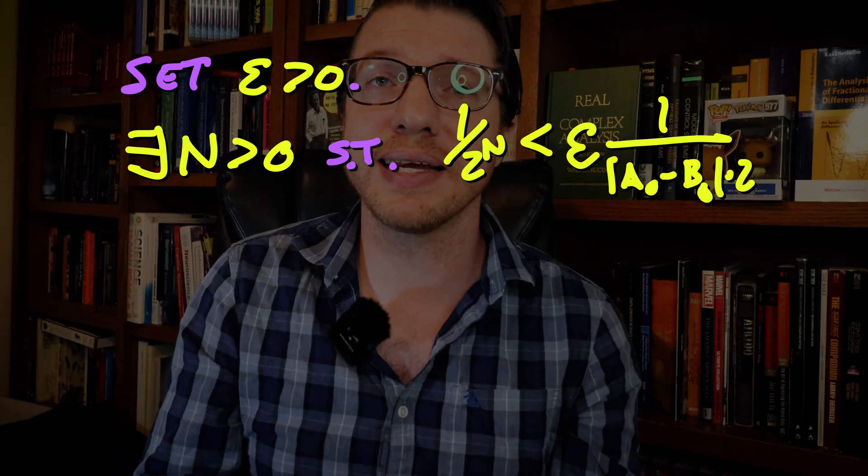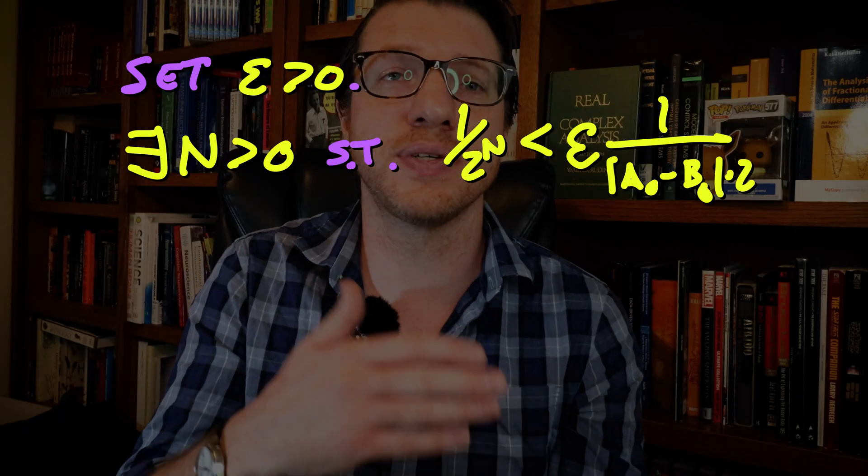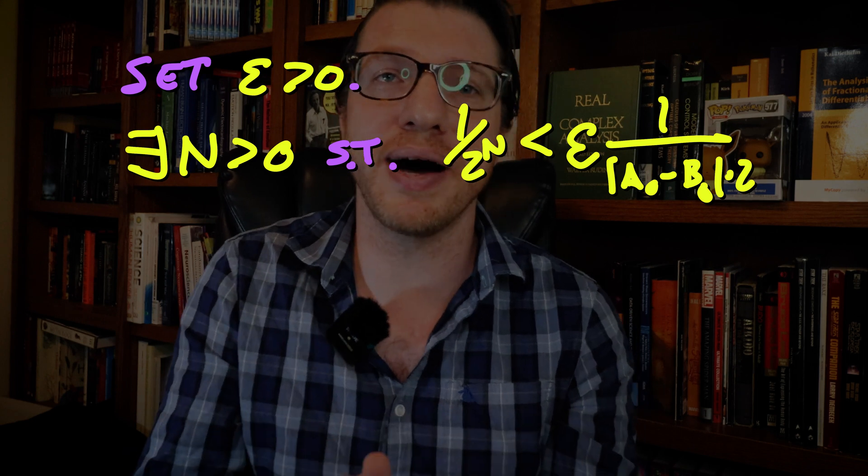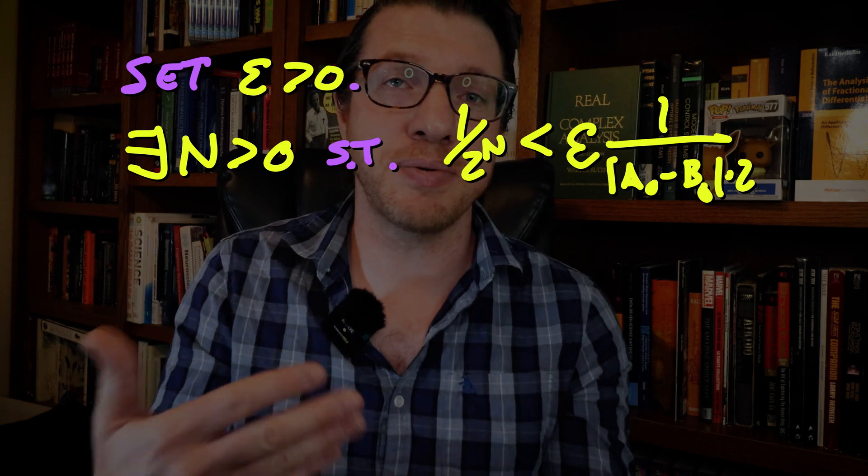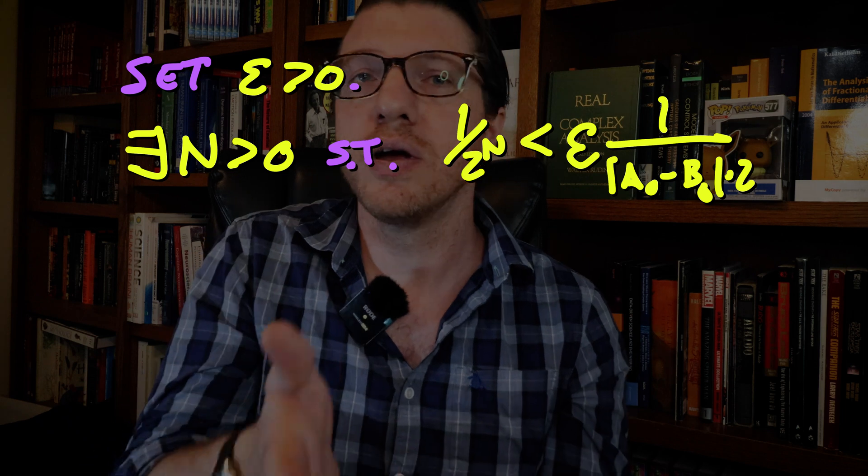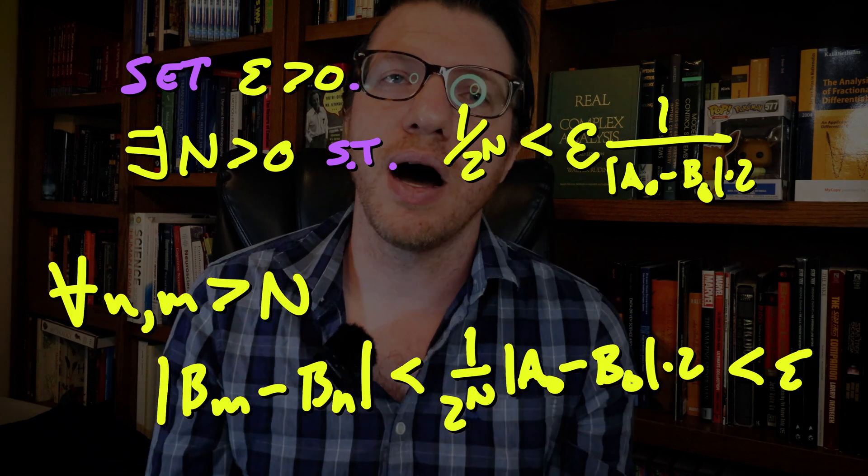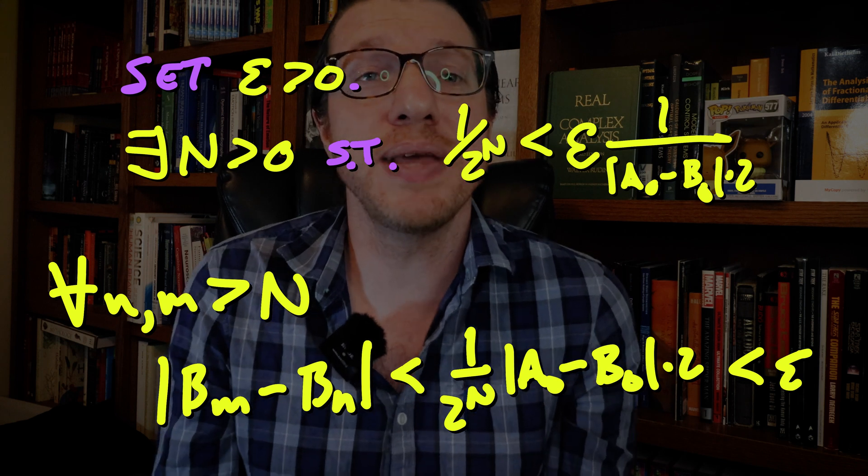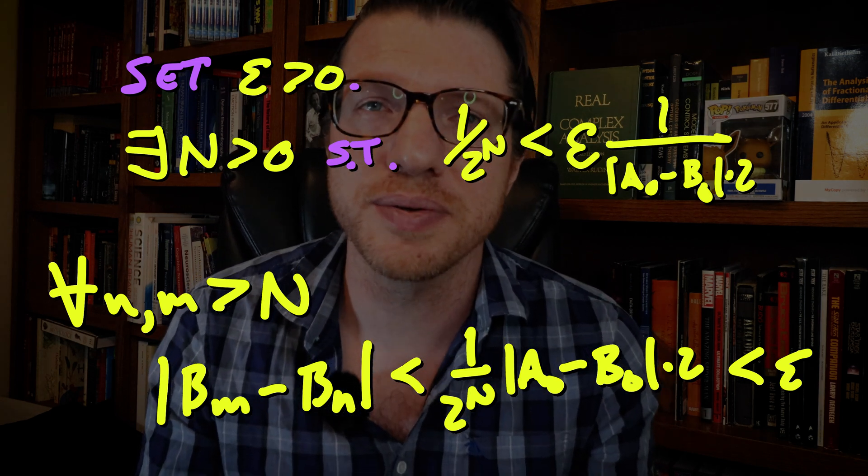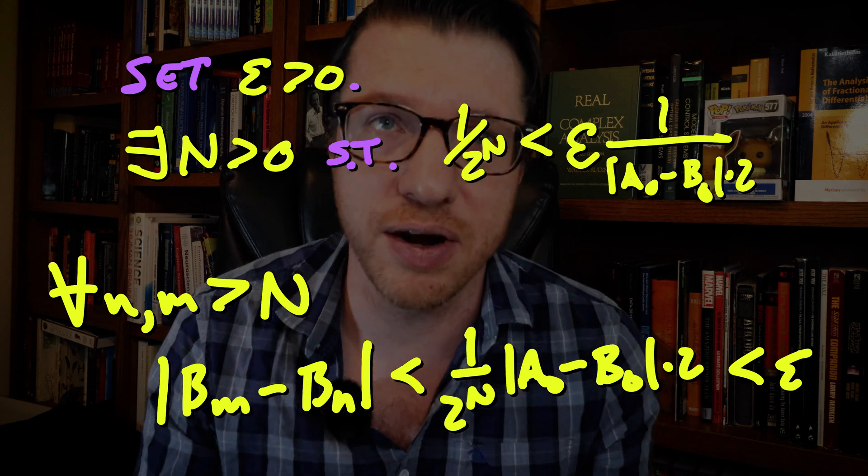Hence, if we set epsilon to be greater than zero, we can find a capital N such that one-half to the capital N is going to be less than epsilon divided by a0 minus b0 in absolute value times two. Moreover, for every m and n bigger than capital N, we have this bound on the distance between bm and bn. Hence, this is a Cauchy sequence of real numbers. Now we want to get a real number out of it.